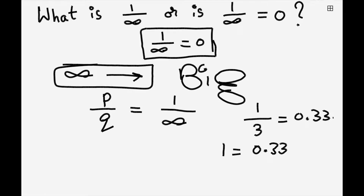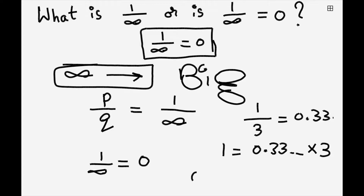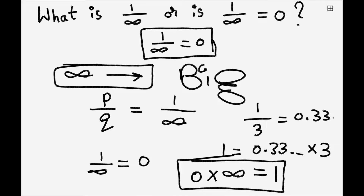If you apply the same logic here, one by infinity equals to zero. But then do we get zero times infinity equals to one? Do you agree with this statement? Here is some paradox.